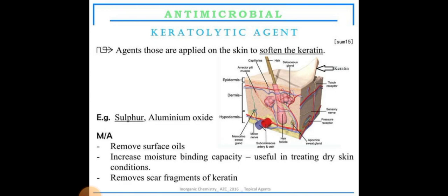Examples of keratolytic agents are sulfur and aluminium oxide. The mechanism of action: keratolytic agents first remove the surface oils present on the skin, then increase the moisture binding capacity. This is useful in treating dry skin conditions. They also remove scar fragments.